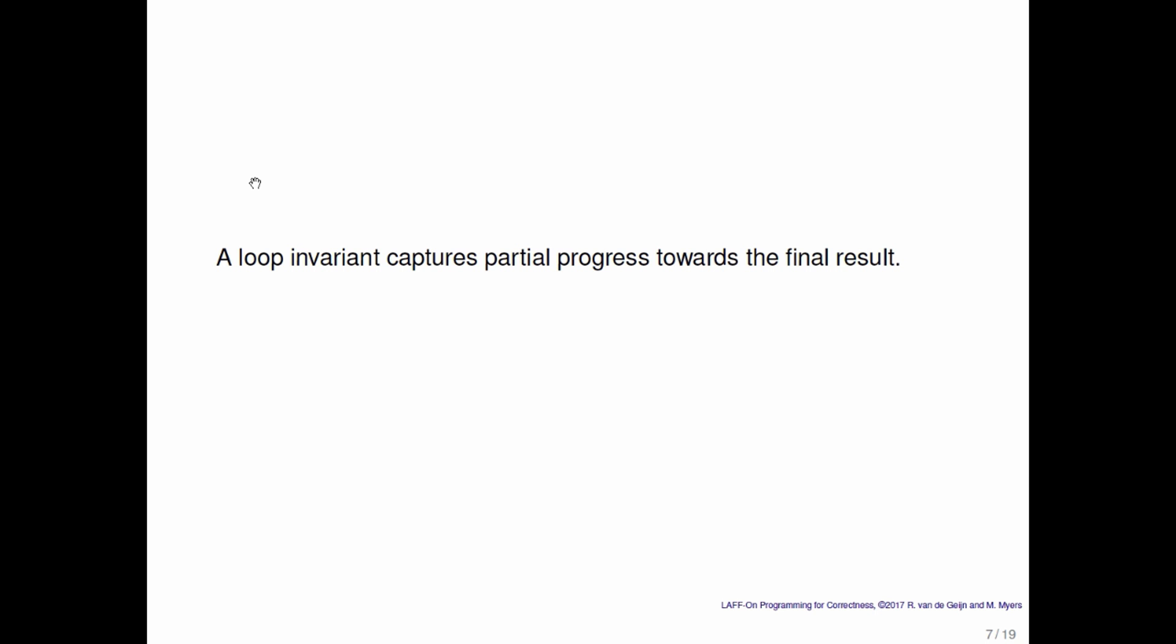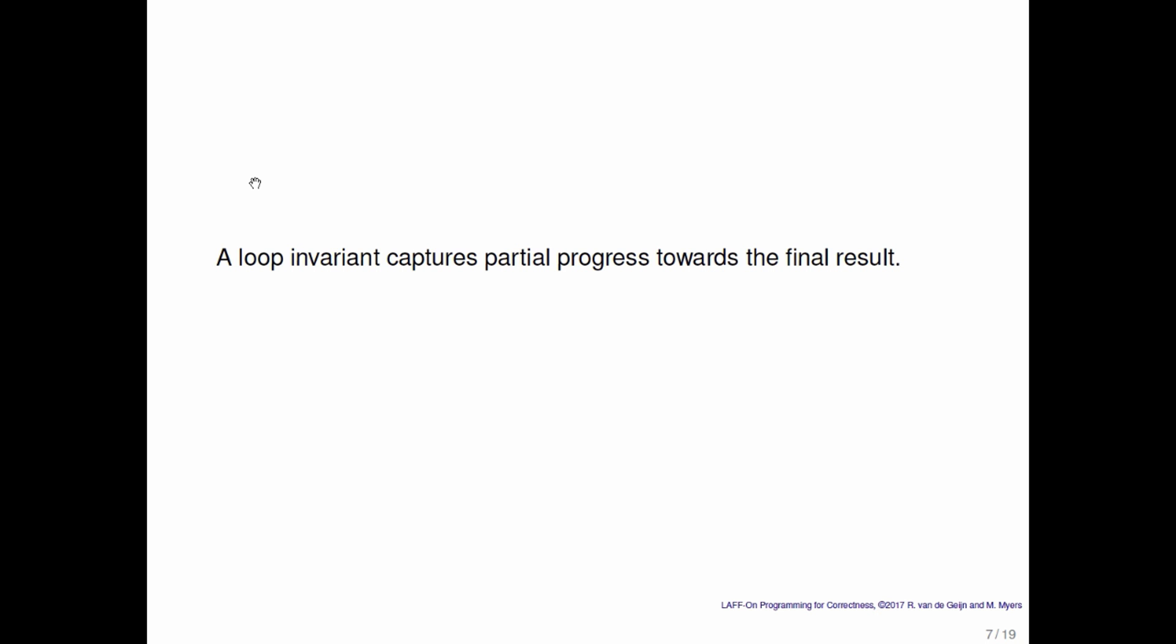And partial we take kind of loosely here. If you haven't done anything yet, we will call that partial progress. And if you have completely finished, that actually is partial progress too. There just happens to be no computation left to be done. So what that tells us is that we should look for taking pieces from the partitioned precondition and the partitioned postcondition and see if we can't kludge those together into something that can become a loop invariant.